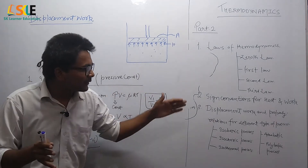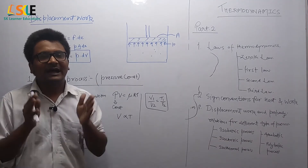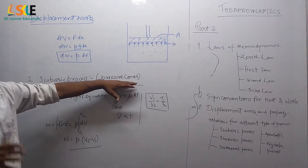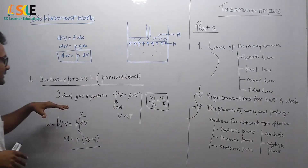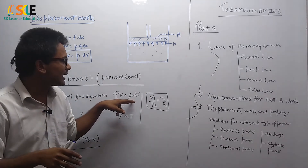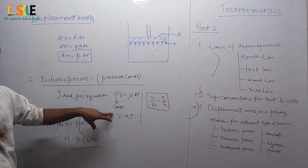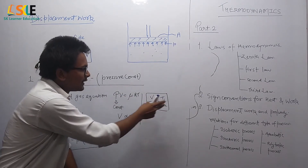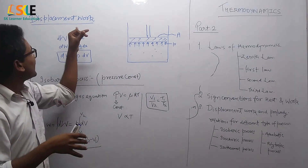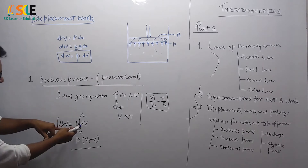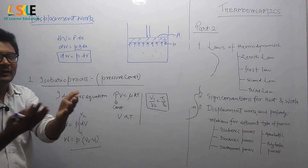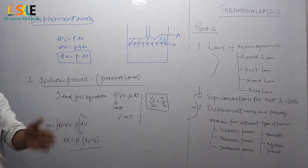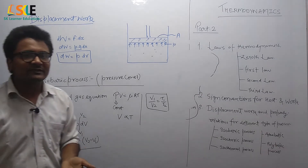Now, how does displacement work differ for different types of processes? First, we will see the isobaric process, where pressure remains constant. From the ideal gas equation pV = μRT, since pressure is constant, volume is directly proportional to temperature. The property relation is V1/V2 = T1/T2. For the work done, since displacement work is p·dV and pressure is constant, we can take pressure outside the integral and integrate volume from V1 to V2. The work done is P(V2 − V1). We can use this formula for numerical problems.